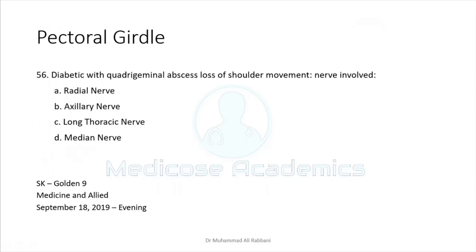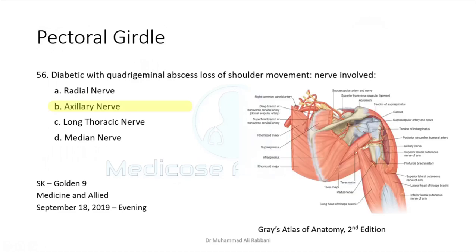For the upper limbs, let's start with the pectoral girdle — that's the component of osteology. A diabetic with quadrilateral space abscess presents with loss of shoulder movement. The abscess in the quadrilateral space involves the nerve present there. You should know the three spaces: the quadrilateral space, upper and lower triangular spaces, and their contents. The answer here is the axillary nerve.